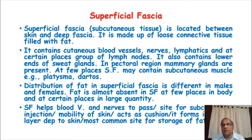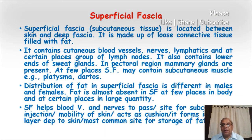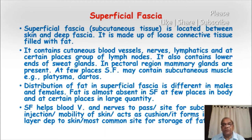The blood vessels and nerves running in the loose connective tissue of the superficial fascia come from the deeper part of the body — they pierce the deep fascia and then run for some distance in the superficial fascia before going toward the skin to supply it. That is why they are called cutaneous nerves and blood vessels. The superficial fascia is well developed in certain areas — for example, it contains a lot of fat in the gluteal region.